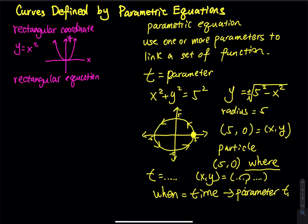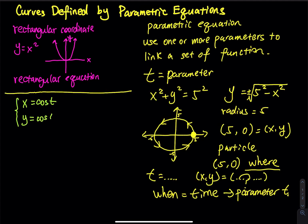Let's use a simple parametric equation. The parametric equation I will use is: x equals cosine t and y equals sine t, with t between 0 and 2π. This is a parametric equation — I use a parameter t to link a set of functions.